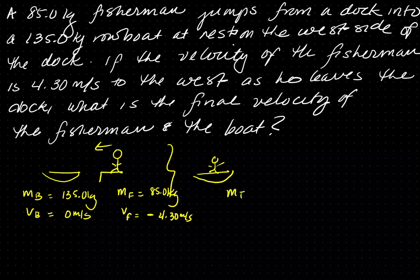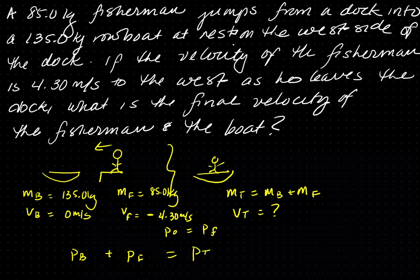At the end we have a mass total, which is the mass of the boat plus the mass of the fisherman, and we have velocity total, which is what we're looking for. We know momentum initial has to equal momentum final because there's no external forces. Initially there are two pictures — a boat and a fisherman — and at the end there is one picture, so there's one equation. We can cancel out the boat because it's at rest; since velocity is zero, momentum becomes zero. So we have mass of fisherman times velocity of fisherman equal to mass of boat plus mass of fisherman times velocity total.